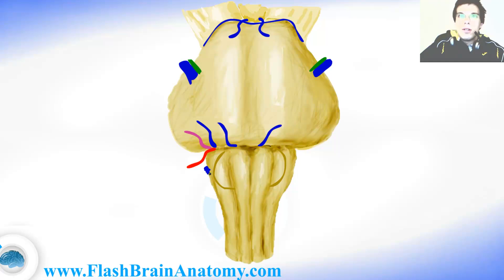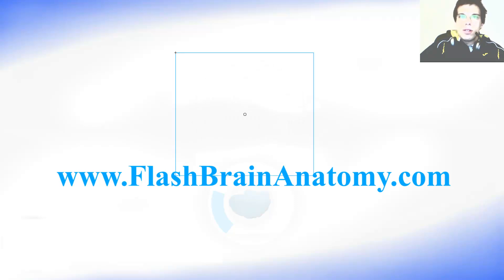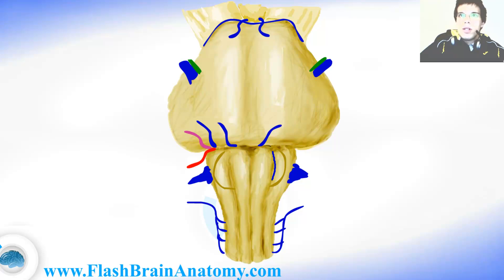The 10th cranial nerve here is called the vagus, and the same on the other side. More caudal from the vagus we have the accessory nerve, coming from the anterolateral sulcus. Between the olivary body and the pyramid is the hypoglossal nerve.